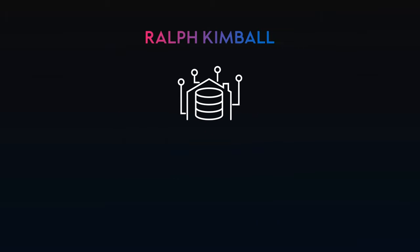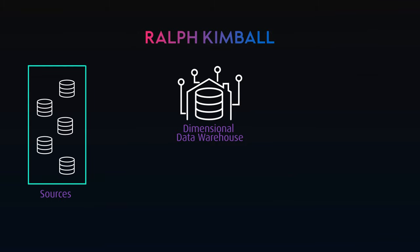Following Inmon, Ralph Kimball popularized what he called the Dimensional Data Warehouse. The idea is when data is brought in, it is denormalized into a flat or dimensional model, often called a star schema. This format makes query writing fast and simple, getting from data to reporting as quickly as possible. Data from a specific subject area or process is put into a star schema, with a measurable process connected to various attributes. This is the data mart of the Kimball design.